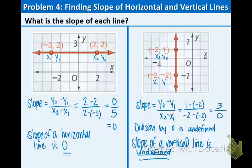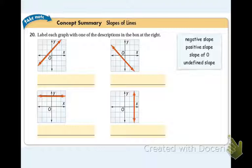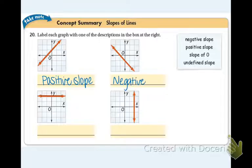We've looked at slopes that are positive, negative, 0, and undefined. Now let's do the concept summary. We need to match the slopes with the graphs. The first graph goes up from left to right, so it's a positive slope. The next graph goes down from left to right, so it's a negative slope. The horizontal line has a slope of 0, and the vertical line has an undefined slope.